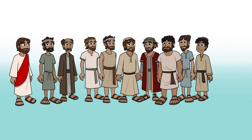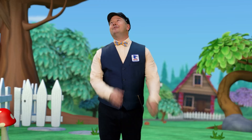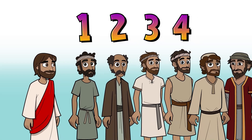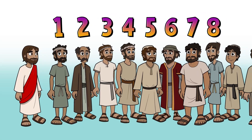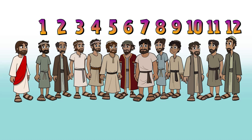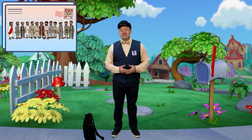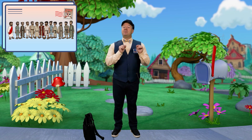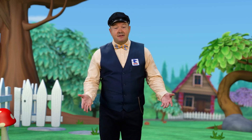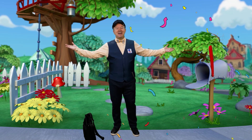Then there was Thomas, and James, and Thaddeus, and Simon, and Judas. Whew, that's a lot! Let's count all twelve: one, two, three, four, five, six, seven, eight, nine, ten, eleven, twelve! We did it! These were Jesus' twelve disciples — all different people from different places, with different jobs and different families. But Jesus chose them all to follow him. Why do you think Jesus chose different people? Because Jesus loves everyone! And Jesus wants us to love everyone too — everyone, everywhere!